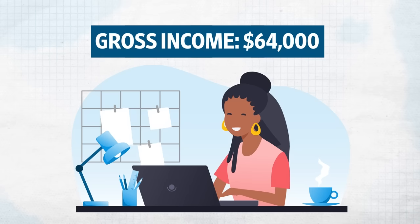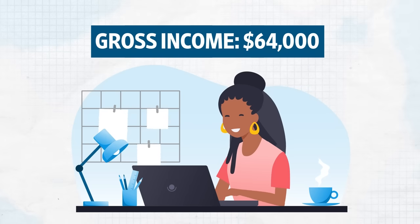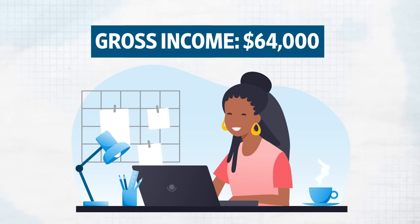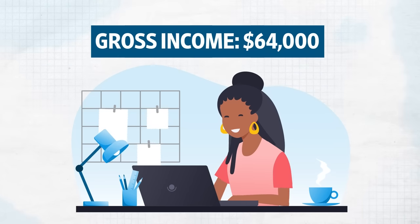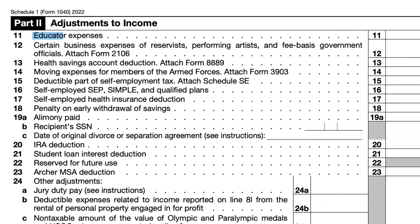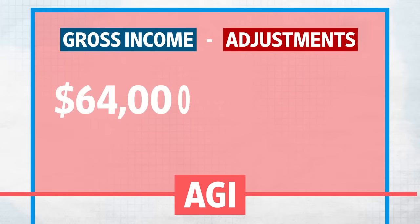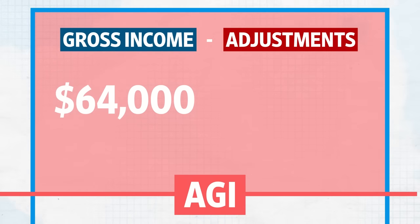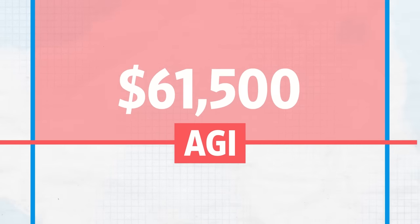Remember, if you have other sources of income, like from freelancing or side hustles, you'll need to add those to your gross income as well. Now to find Olivia's AGI, she has to subtract the adjustments from her gross income. There are quite a few possibilities, like educator expenses and self-employed health insurance. One of those adjustments is interest on student loan debt. Olivia has private student loan debt and made payments throughout the year, so she can subtract up to $2,500, bringing her AGI to $61,500.